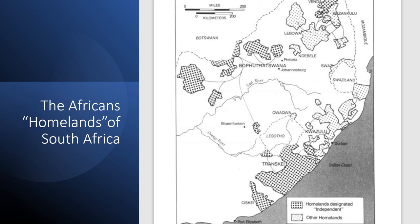Bophuthatswana followed in 1977, Venda in 1979, and the Ciskei in 1981. As these homelands attained so-called independence, their citizens were stripped of their South African citizenship — they were living in South Africa but stripped of South African citizenship. The Pretoria government ensured that collaborative chiefs such as the Matanzima brothers in the Transkei maintained control of the homelands. KwaZulu-Natal, the most populous homeland, represented a partial exception: Chief Mangosuthu Buthelezi established a powerful political organization called Inkatha, which refused to accept independence on the South African government's terms and developed an ambiguous relationship with Pretoria.